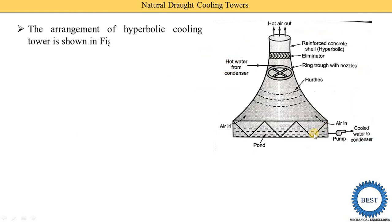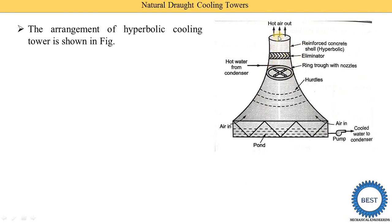Here is the diagram of a natural draft or hyperbolic cooling tower. It has various components: the hyperbolic profile, and at the point of minimum area in the hyperbolic profile, a ring of nozzles is installed. A number of nozzles are arranged on this ring and hot water from the condenser is sprayed through them. Wooden hurdles are placed inside, water is collected at the bottom, and air enters from the bottom. An eliminator is installed to absorb water particles from the air, and hot air exits from the top.